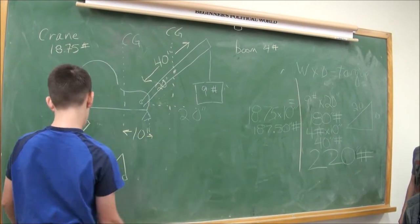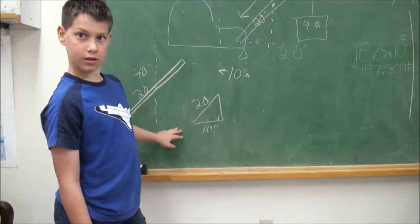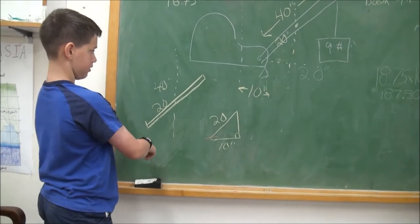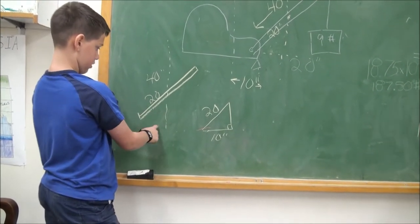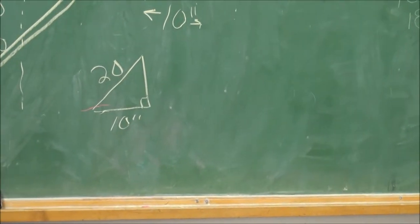If you draw a line here, that is 10 inches. Let me look at that other triangle over there. The distance from the center of gravity to the pivot point is 20 inches. So now we have another triangle there, another 30, 60, 90.